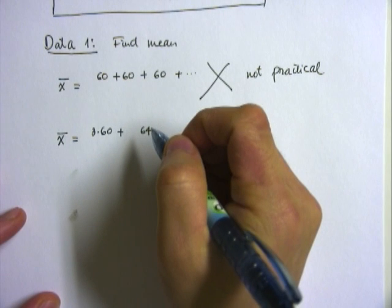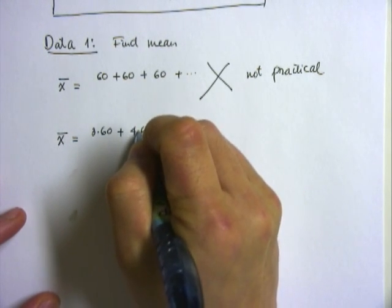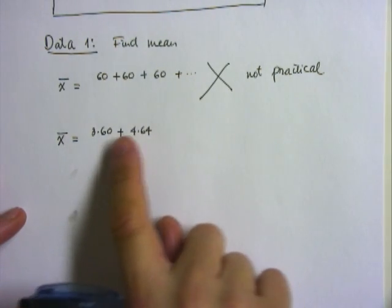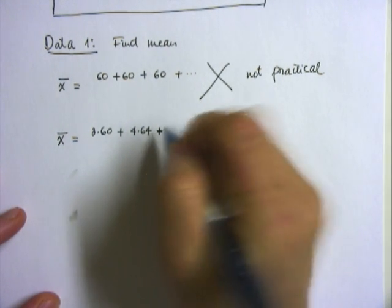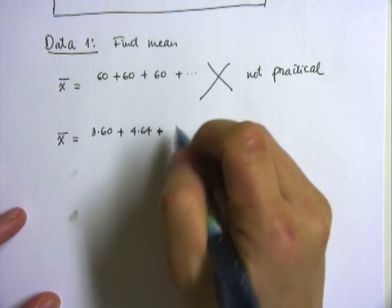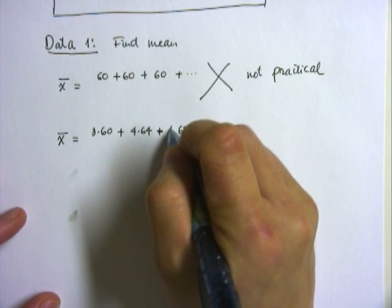So I would multiply 64 with 4 and add it into 3 times 60. And then I'm gonna look at my next distinct data item, and there's 68, and there are 5 of them, so 5 times 68.